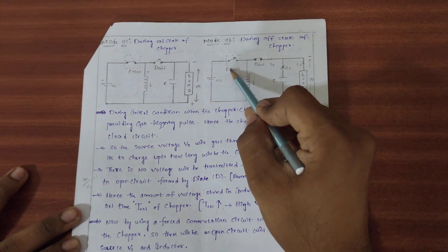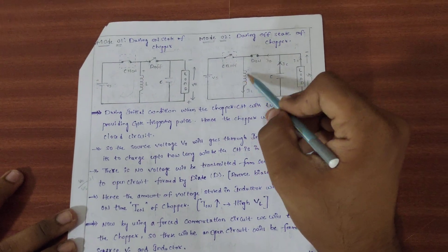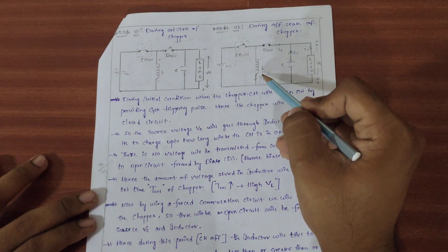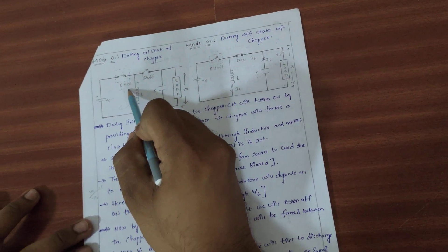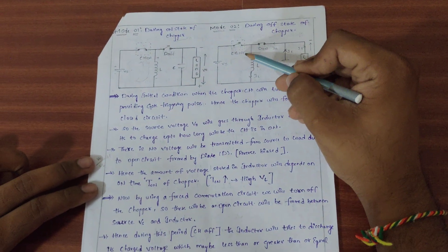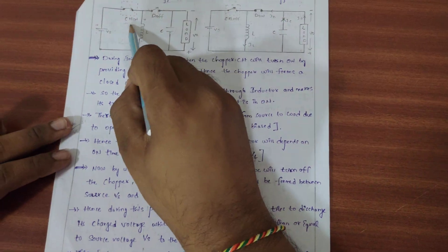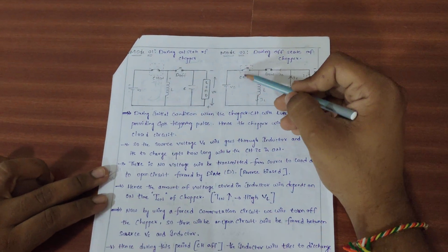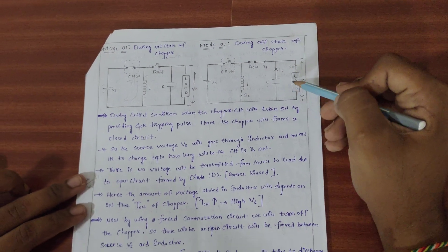During the off state, the source voltage is stored in the inductor and the load is also connected to the source voltage. The turn-on time determines how much voltage is stored — the greater the turn-on time, the more voltage is stored in the inductor. During turn-on, the energy is stored in the inductor, but the output voltage can be greater than Vs. During turn-off, the inductor discharges to supply the load.